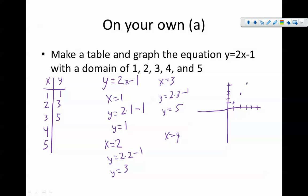x equals 4 is going to be y equals 2 times 4 minus 1, which is 7. And let's extend this up a little bit. So there's 4, 7.